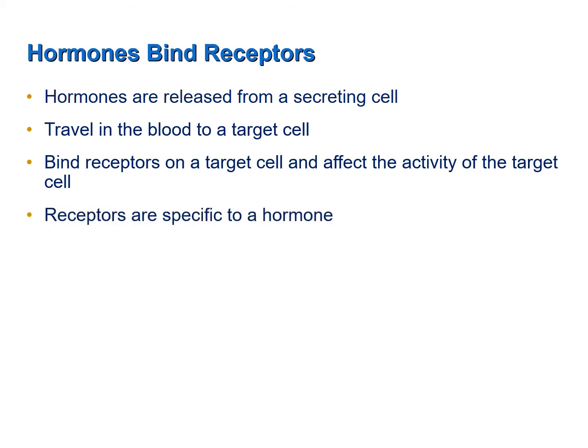Receptors are very specific to a hormone. A receptor for insulin is only going to bind insulin — it's not going to bind growth hormone, progesterone, testosterone, or estrogen. Receptors are very specific to a hormone.